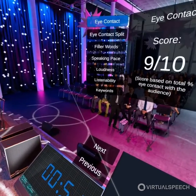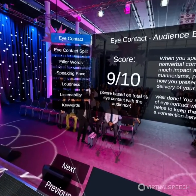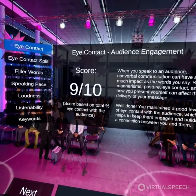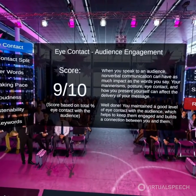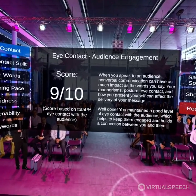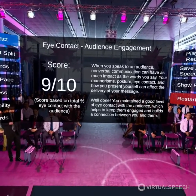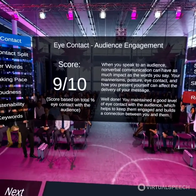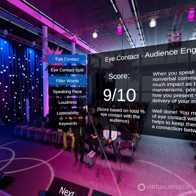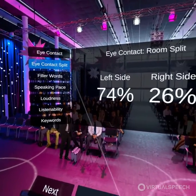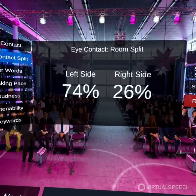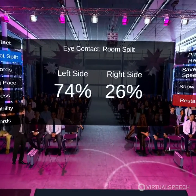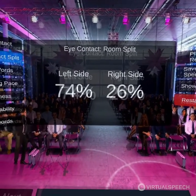I can also press the stop analysis button and get much more detailed feedback on my eye contact — both the overall scores and what I need to improve, as well as the split from the left to the right hand side of the audience.